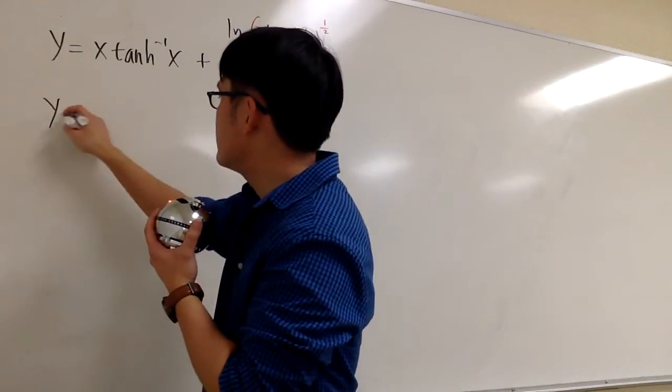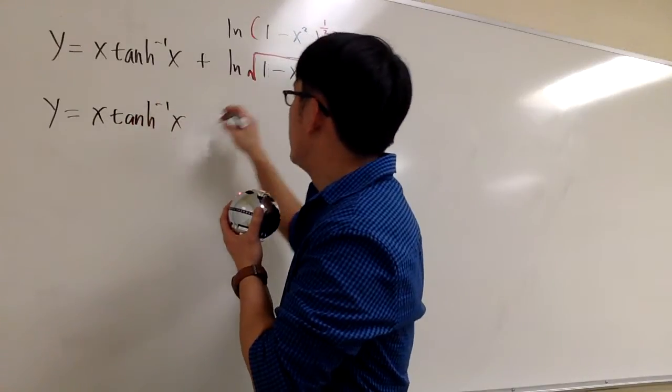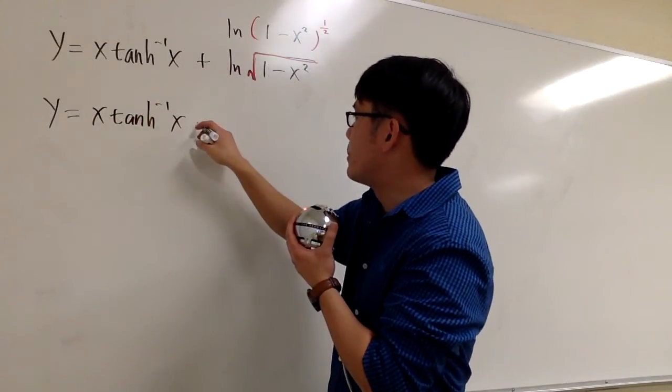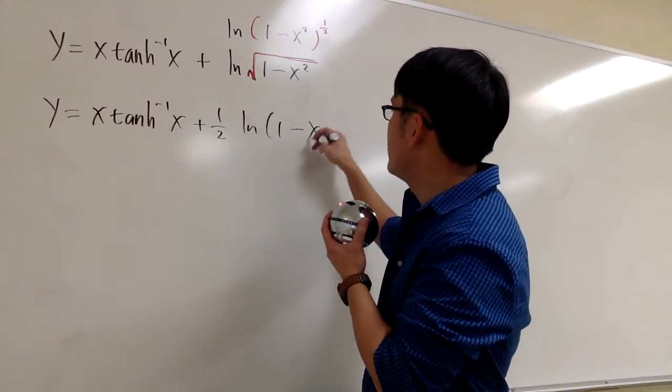I can look at this equation as y equals to x times inverse tangent x, 1 half is in the front, we have the positive, so plus 1 half ln of 1 minus x squared.